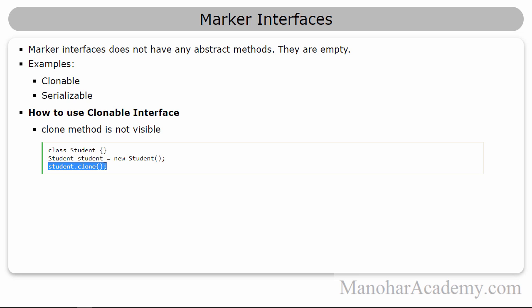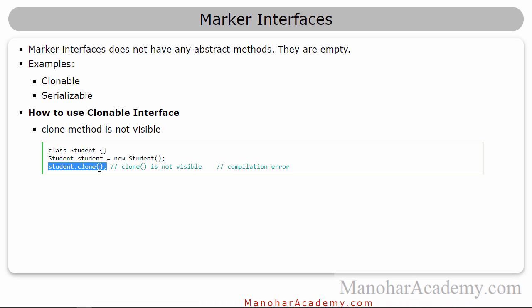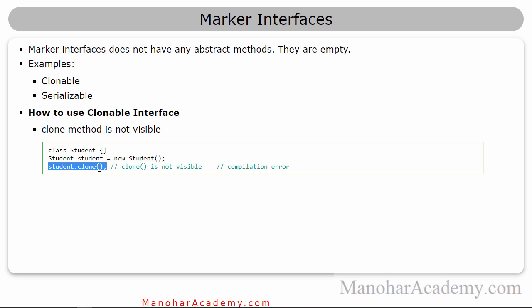But if you write this code, you are going to get a compilation error — it says clone is not visible. So why is clone not visible, even though it is present? Because clone is protected, so it is not visible outside that class.